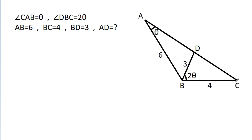In this problem, we have been given that angle CAB is theta, angle DBC is 2 theta, AB is 6, BC is 4, and BD is 3. Then we have to find AD.